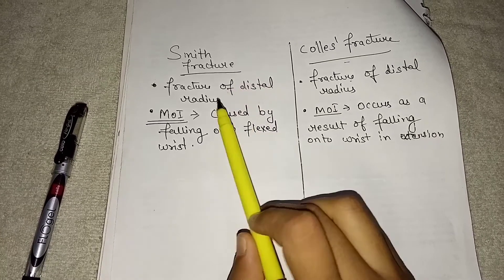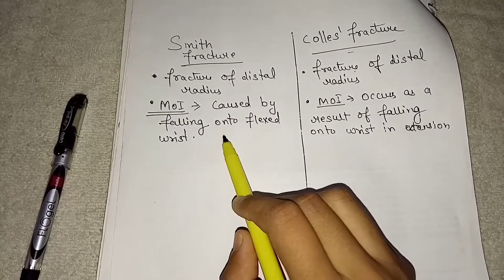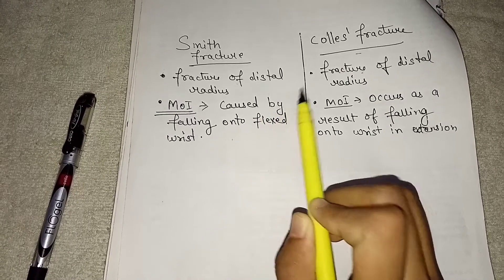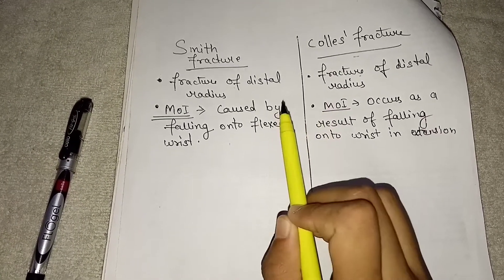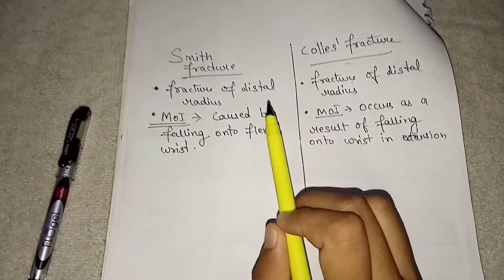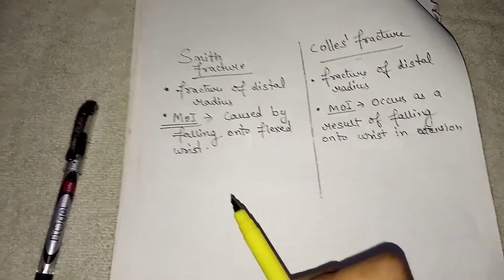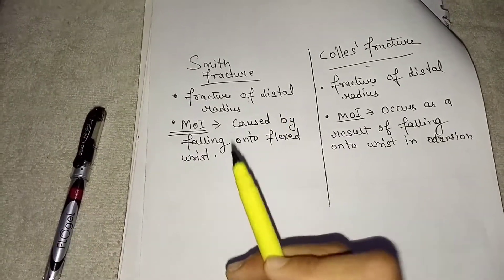And what is the mechanism of injury of Smith fracture? If a person falls on its flexed wrist, this type of fracture will be Smith fracture. It is caused by direct blow to the dorsal forearm or falling onto flexed wrist.